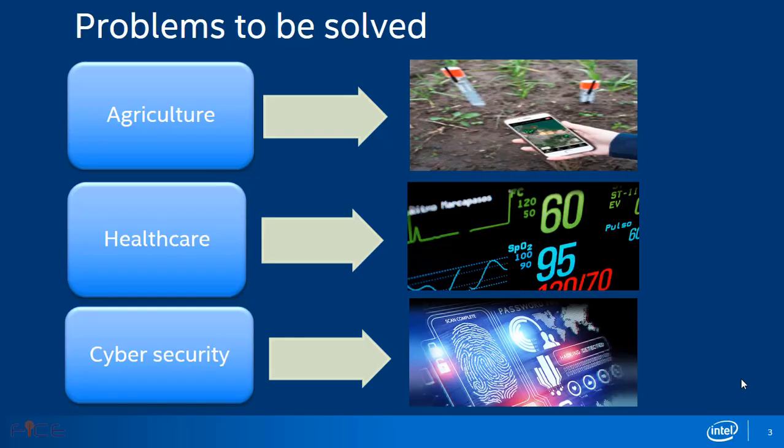Let us begin by talking about some of the problem areas and challenges which can be solved by implementing modern technology. The various problems of the agriculture sector can be solved by implementing modern technology. These modern techniques help farmers to easily monitor their crops for water, fertilizer, and pest management, resulting in improved harvest and reduced operating costs.